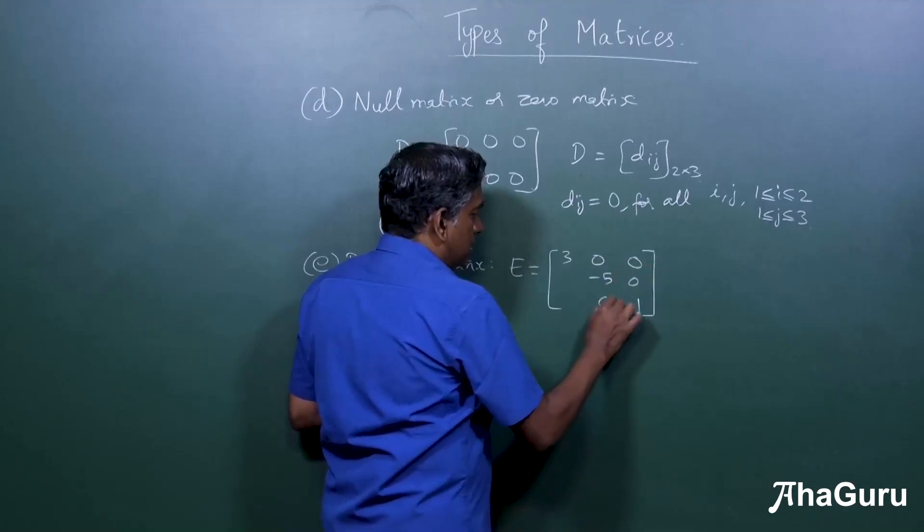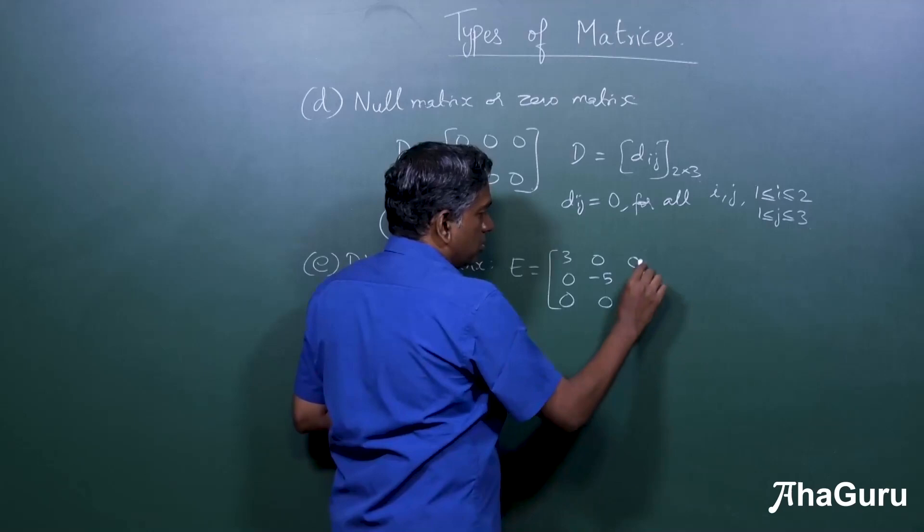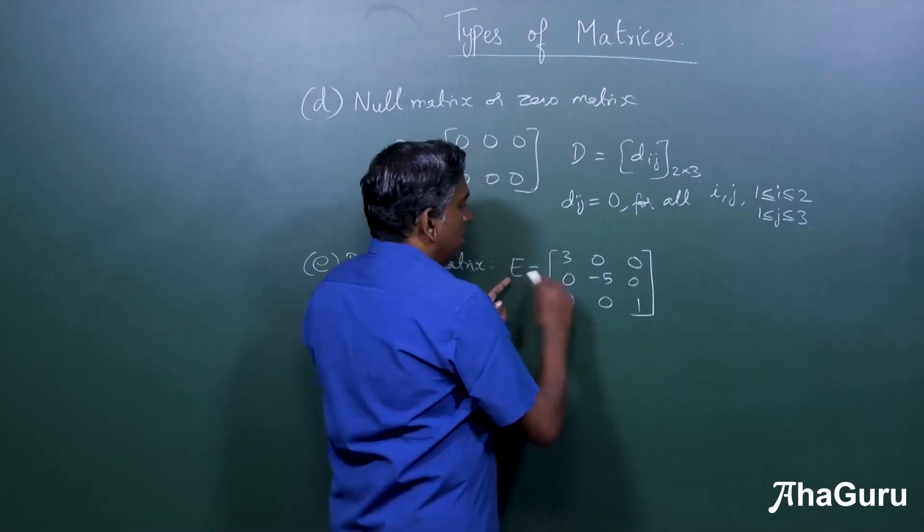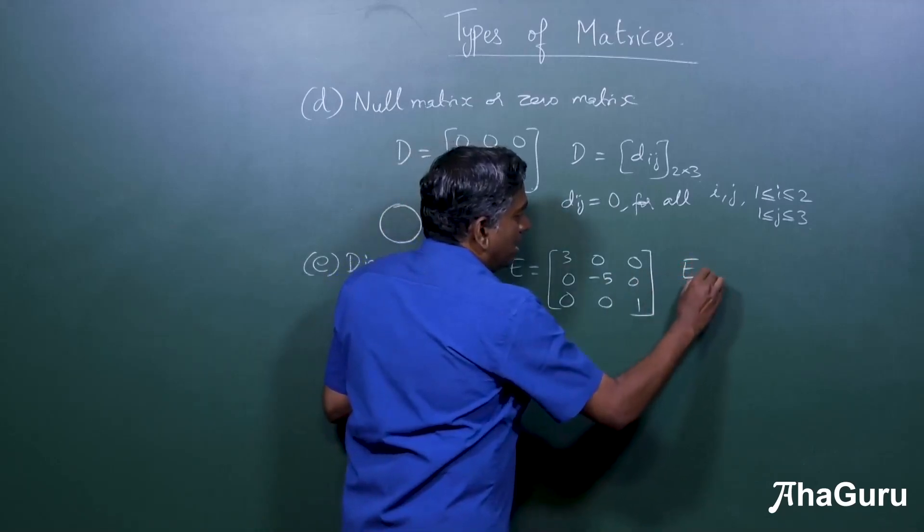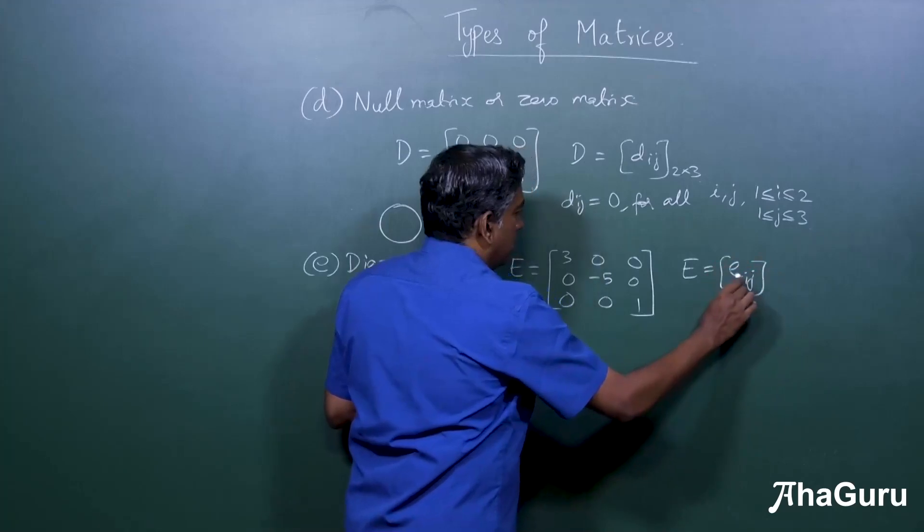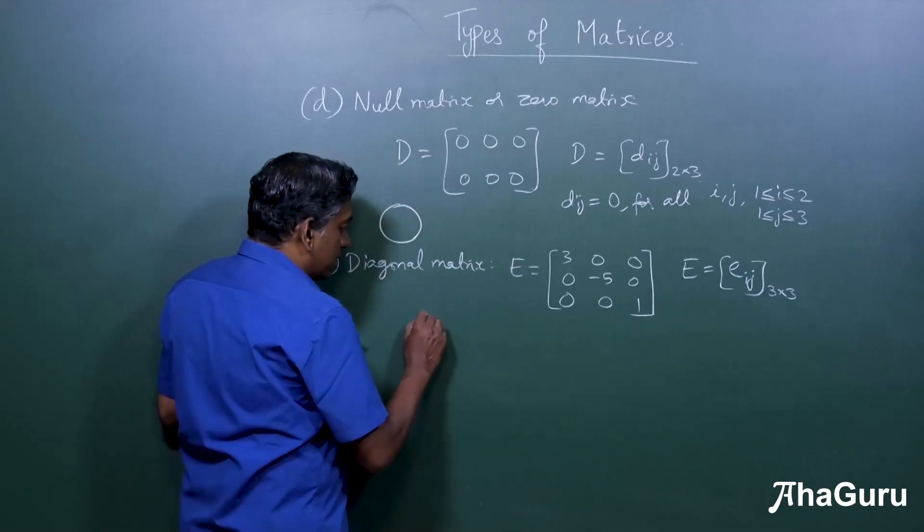So let's say this is three, this is minus five and one. These entries are all zero. So I can in fact add one more. Now E is equal to Eij, and in this case this is three by three.